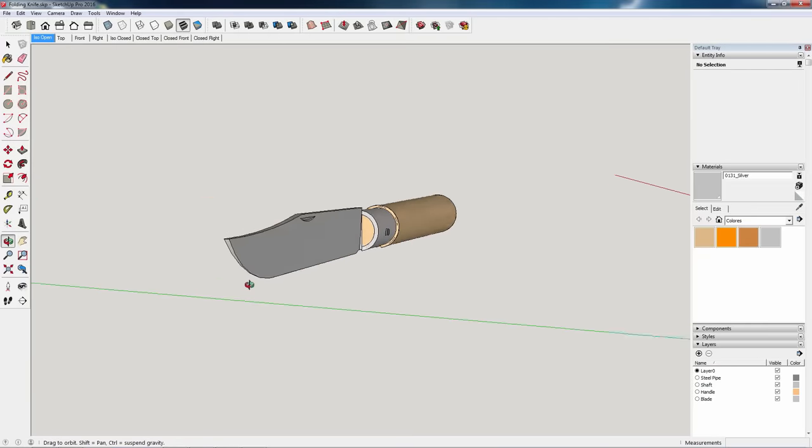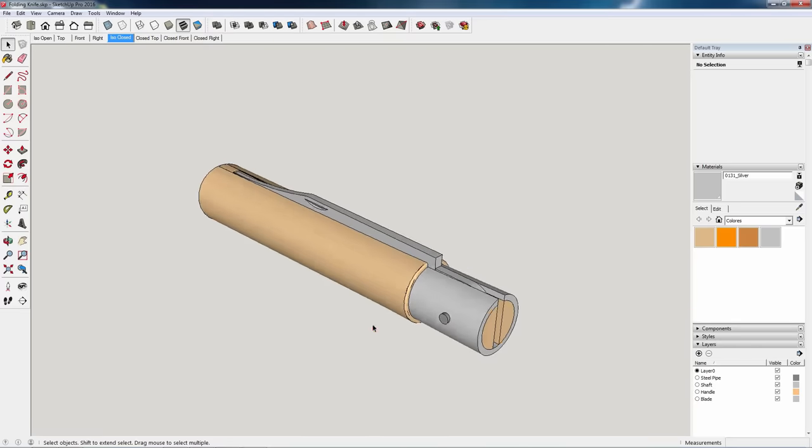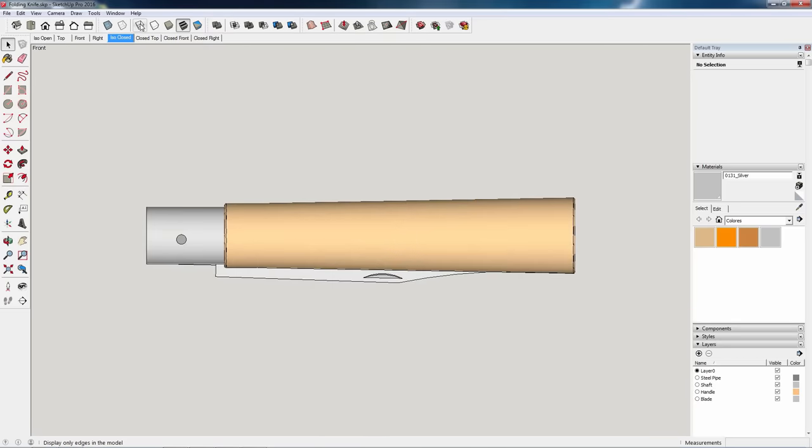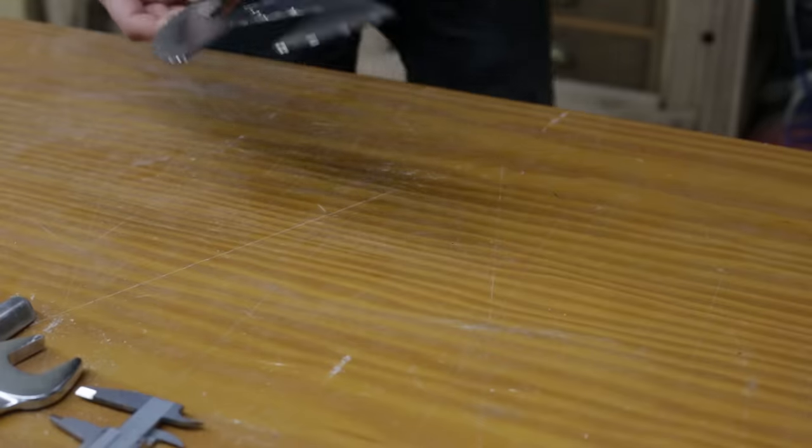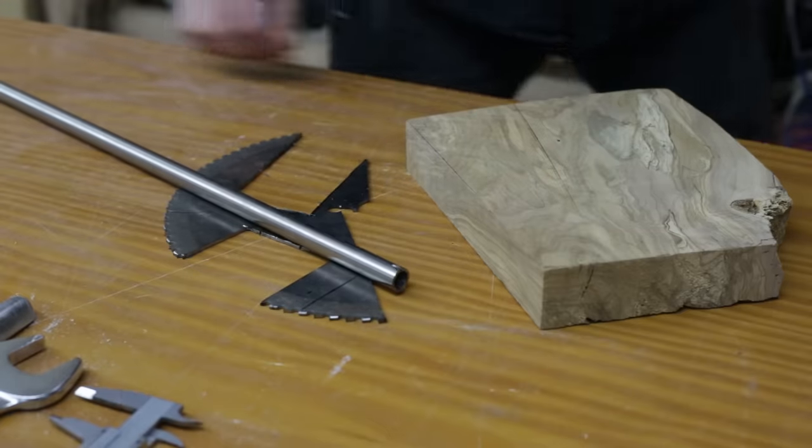Welcome back! Today I'm going to make this folding knife using recycled materials. In this SketchUp file you can see how simple the design is and how easy it is to make. And these are the materials I'm going to use. It's made up of just four parts.